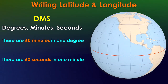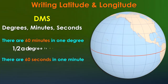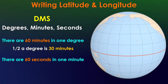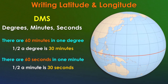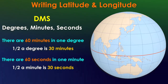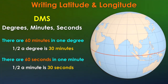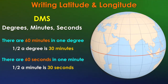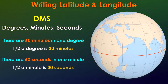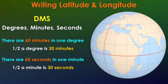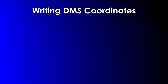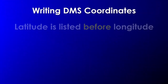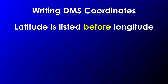Therefore, a half of a degree is 30 minutes, and a half of a minute is 30 seconds. When we write DMS coordinates, there are some important things to keep in mind. First of all, latitude is listed before longitude.